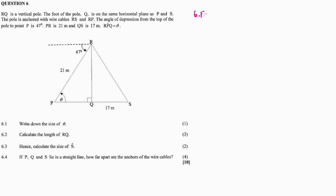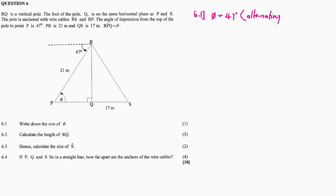So 6.1. This dotted line, as well as PQ, they are actually parallel lines. This dotted line represents the horizontal — an imaginary line which must always be drawn parallel to the horizontal plane. So therefore, if this line and this line are parallel, it means that theta is equal to 47 degrees, because of our alternating angles.